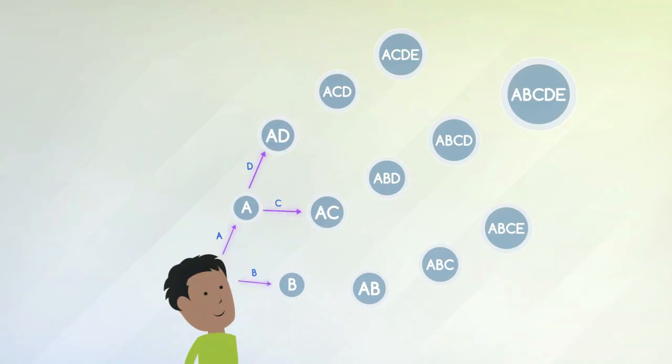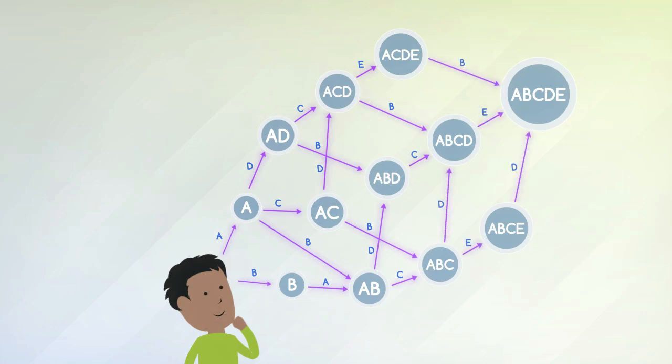All the feasible knowledge states are organized into a learning space, a mathematical structure specifying the relationships among the knowledge states and showing which topics a student is ready to work on.